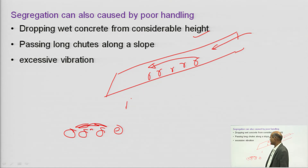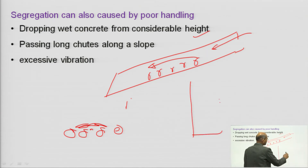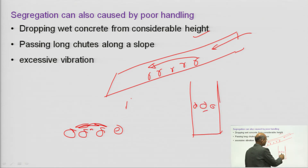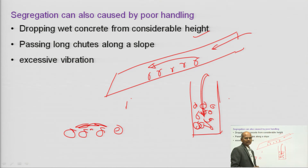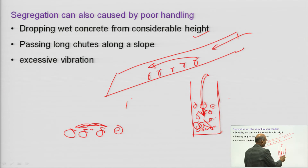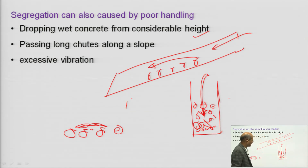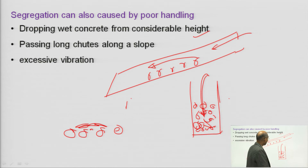Another case is excessive vibration. Concrete needs vibration to expel excess air, but if you vibrate for more time than required — with needle vibrator or otherwise — there is a chance of segregation. Generally, concrete should not be over-vibrated. Bleeding is another factor that may also cause segregation; both bleeding and segregation may occur together in concrete.